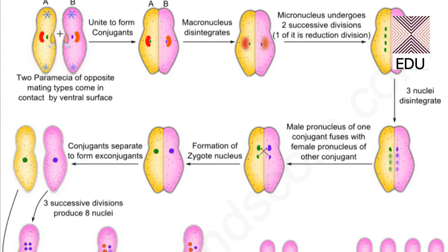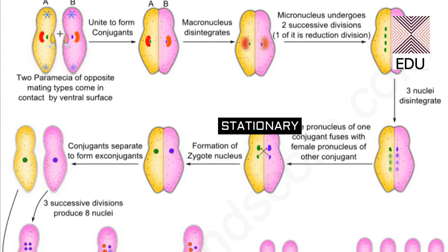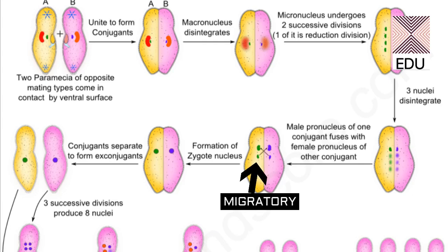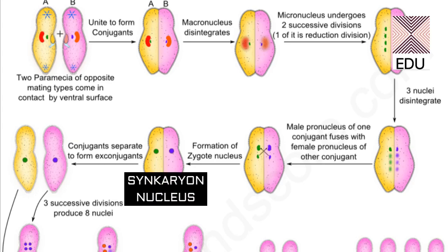This one remaining micronucleus undergoes mitosis to form two micronuclei. Out of these two, one grows in size and forms a bigger nucleus called the stationary nucleus, and the smaller one is called the migratory nucleus. As the name suggests, the migratory nucleus migrates to the other paramecium through the protoplasmic bridge, where it fuses with the nucleus of the second paramecium.